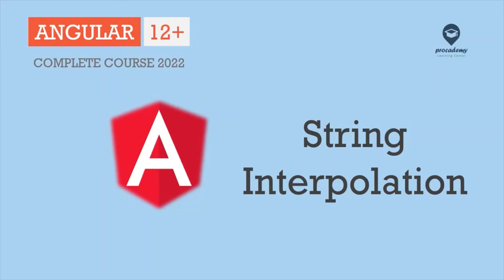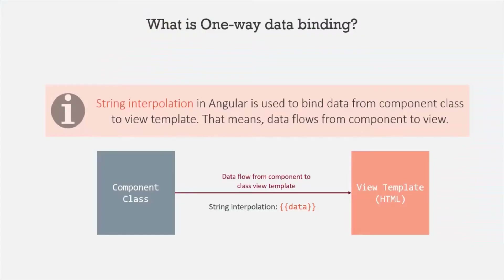In this lecture, you will learn what String Interpolation is in Angular and how to use it to achieve data binding. String Interpolation in Angular is used to bind data from a component class to its corresponding view template, and we use it to achieve one-way data binding — meaning the data flows from the component class to the view template.